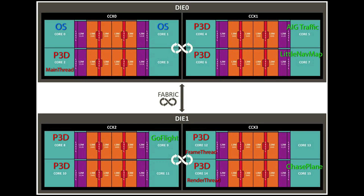The four additional Prepar3D cores are simply there for additional tasks that Prepar3D may perform — it's good to have a few extra cores beyond just the three main threads, since additional threads can spawn that will operate on the flight simulator. In my case I have four more, but depending on how many you have spare, you could just have two more or one more — whatever your CPU core count allows. Just give yourself a few extra cores for Prepar3D.